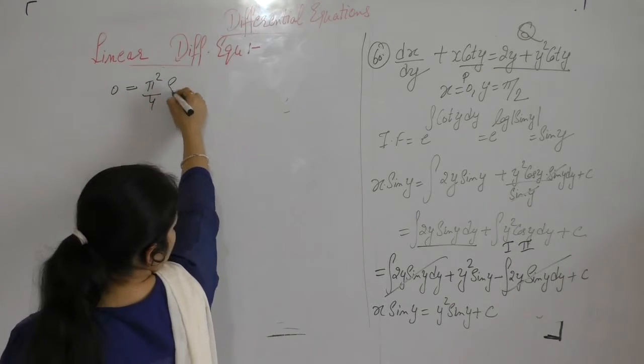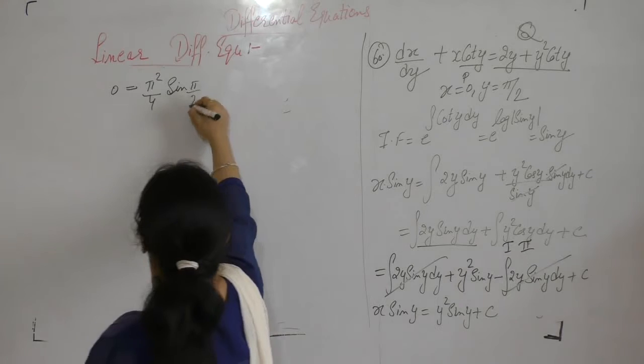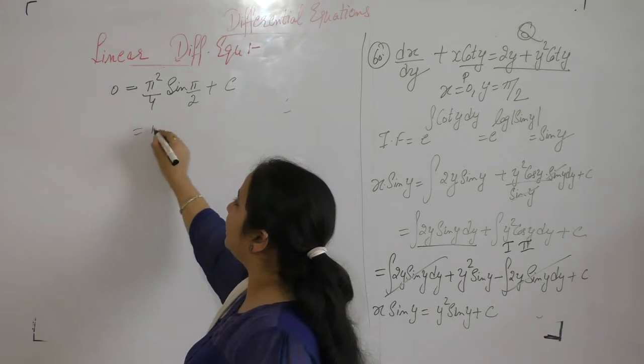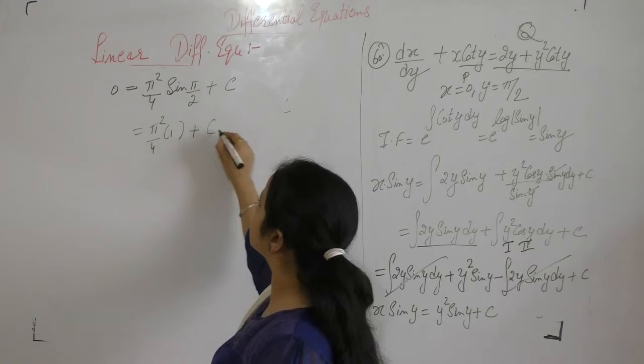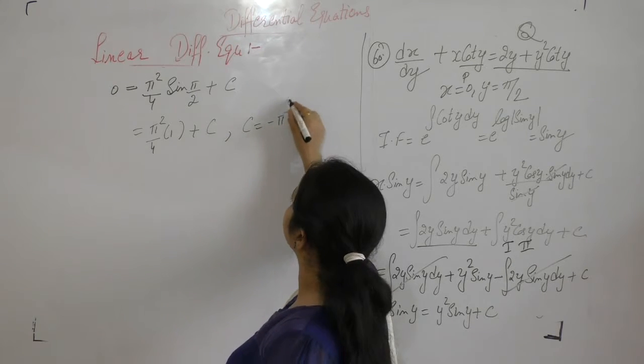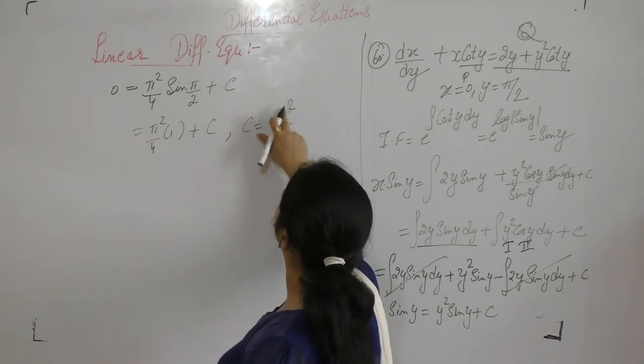Sin y where y is 5π/2. Sin 90 degrees, we have value of sin 5π/2 as 1. So value of c is minus π squared by 4.